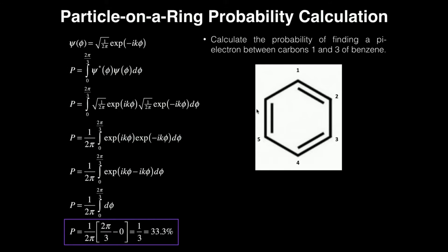Well, let me ask you a question. How many radians are in a circle? Two pi. How many segments do we have here in benzene? Six.